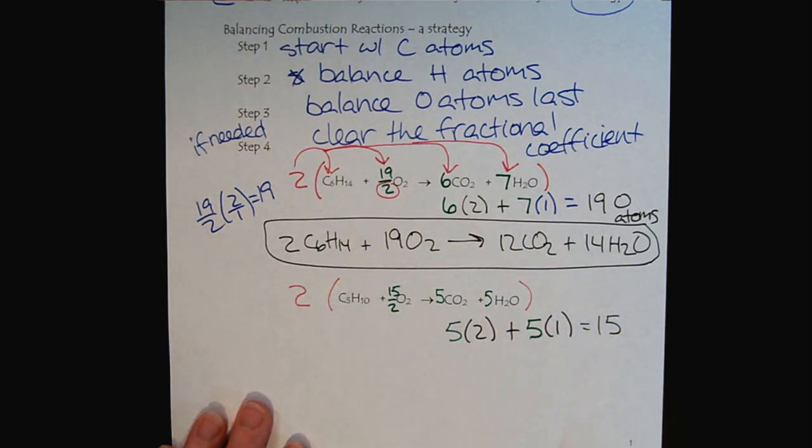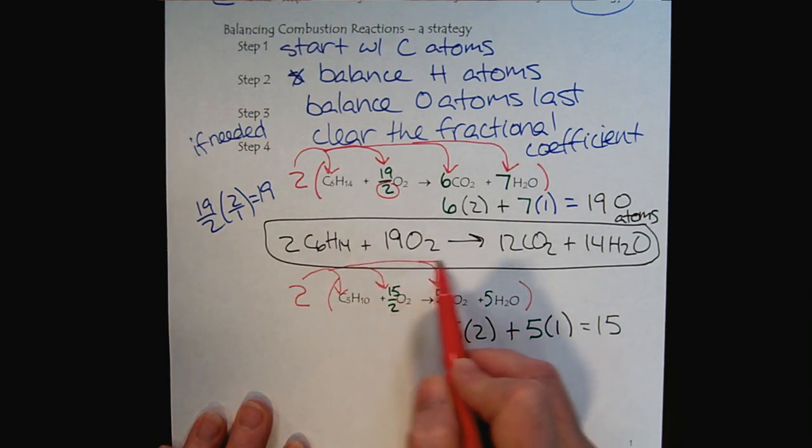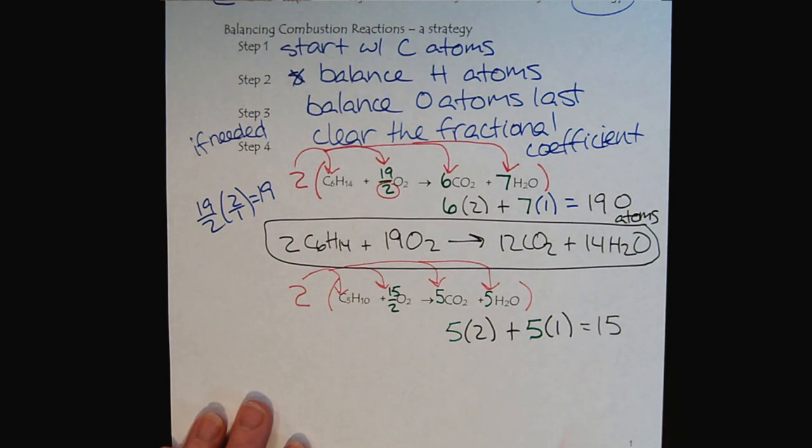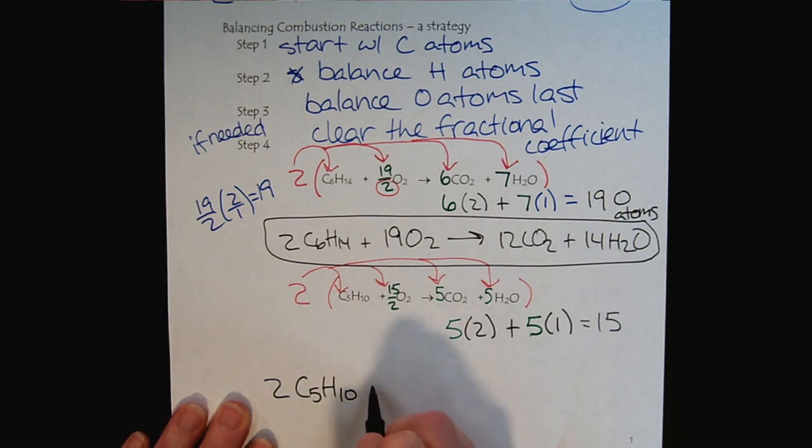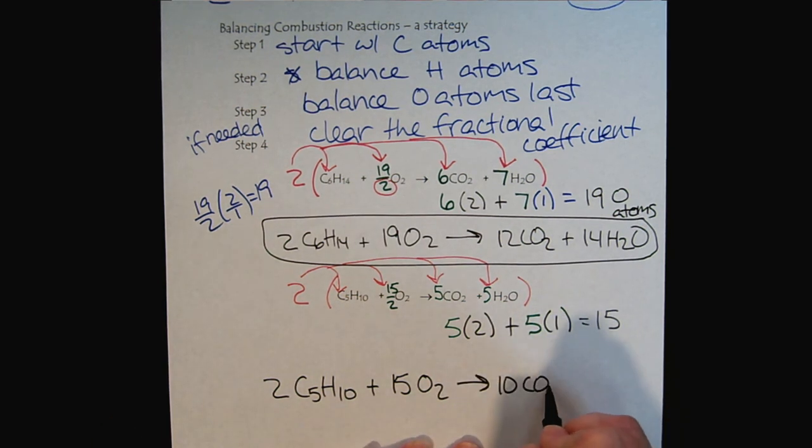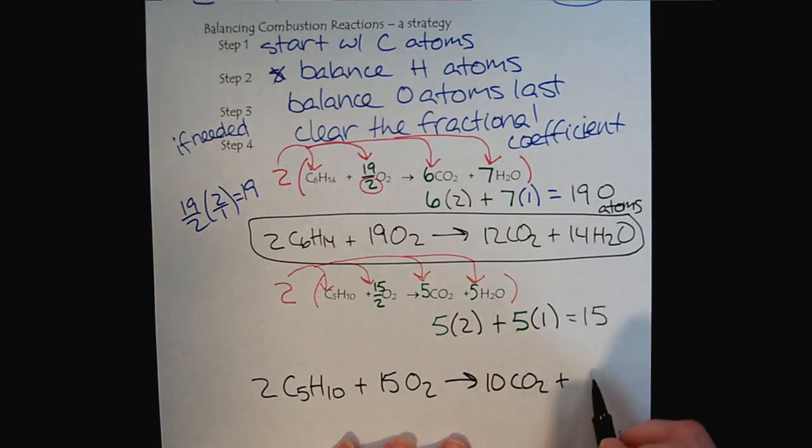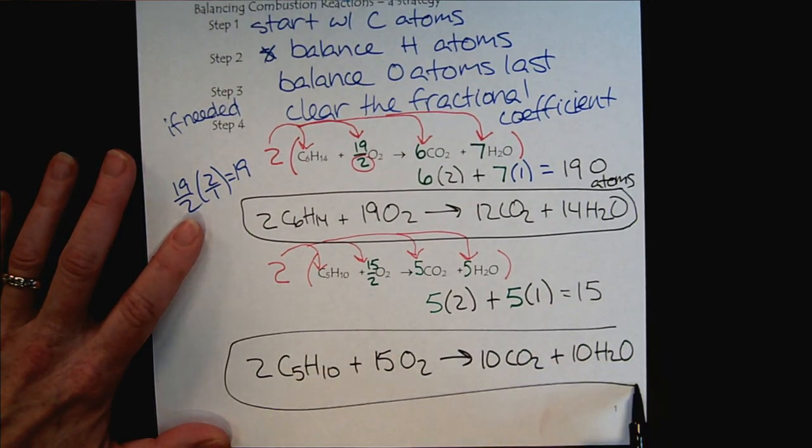We will multiply the whole expression by 2. Remembering that the 2 is multiplied by each coefficient in the reaction. So, ultimately, we would have 2 molecules or moles of C5H10 reacting with 15 molecules or moles of oxygen to produce 10 molecules or moles of CO2 and 10 molecules or moles of water. So, our final balanced equation is right there.